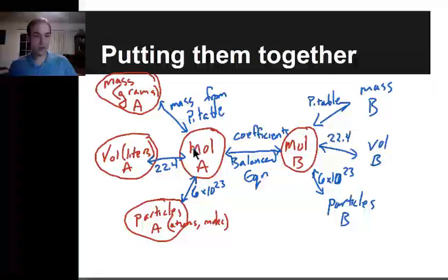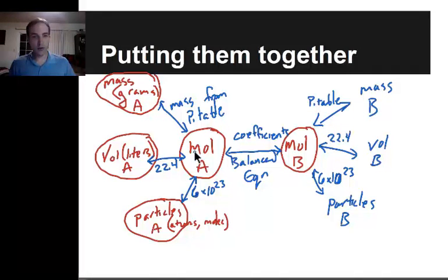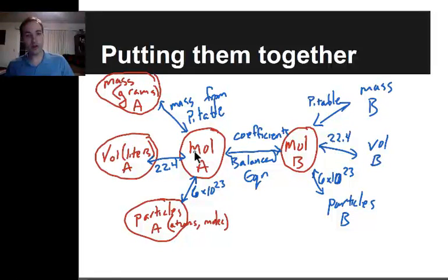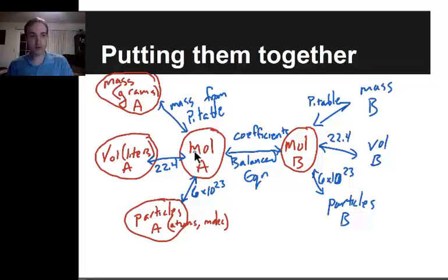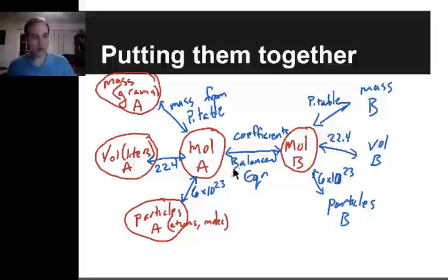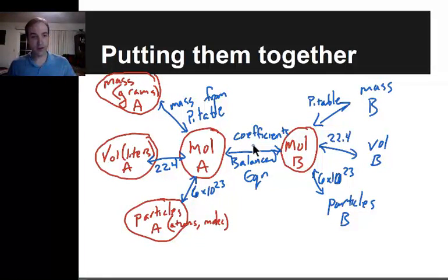So I could go from particles of B to moles of B to moles of A — that's a two-step problem. I'd like you to pause the video right now and copy this diagram down into your notes. It's going to be an important map for helping you figure out the path for converting from one measurement to another.